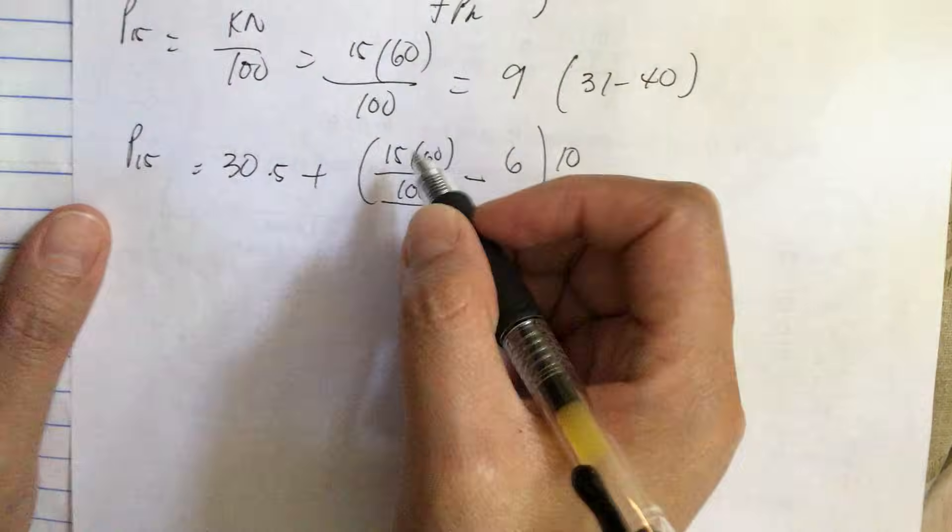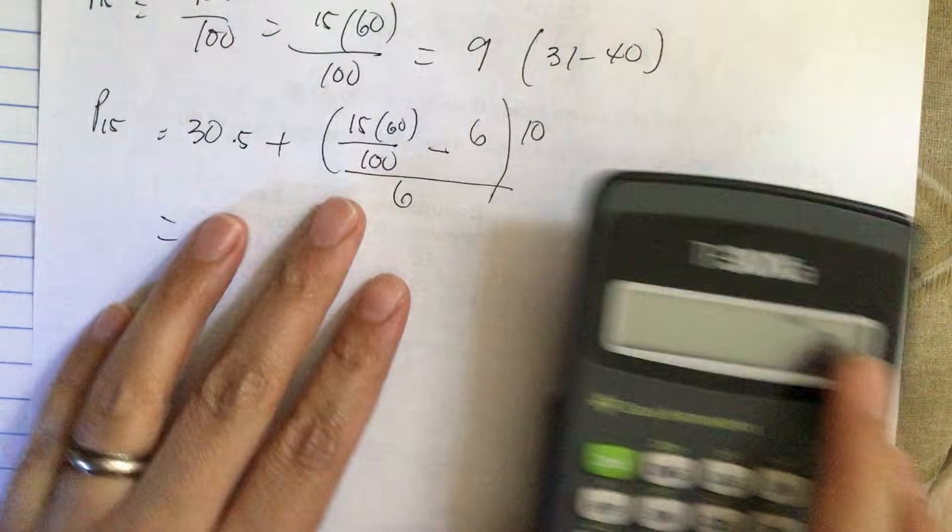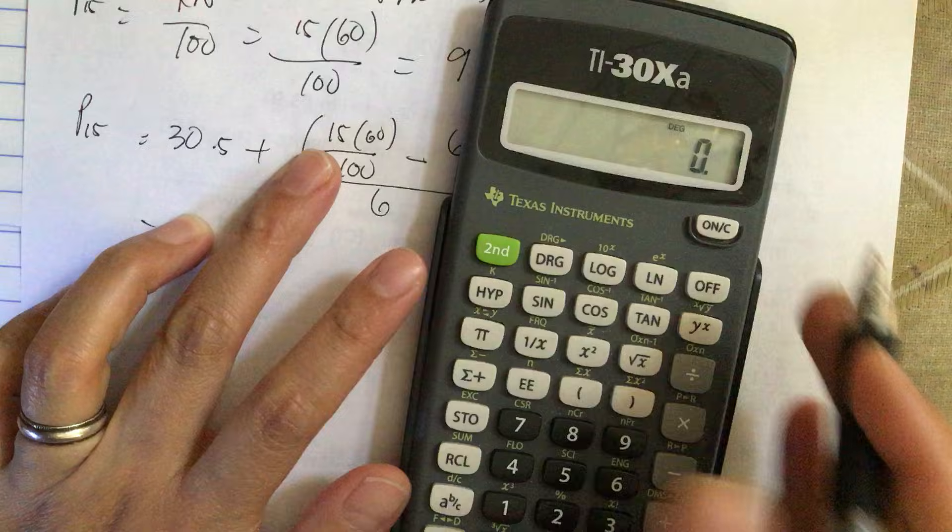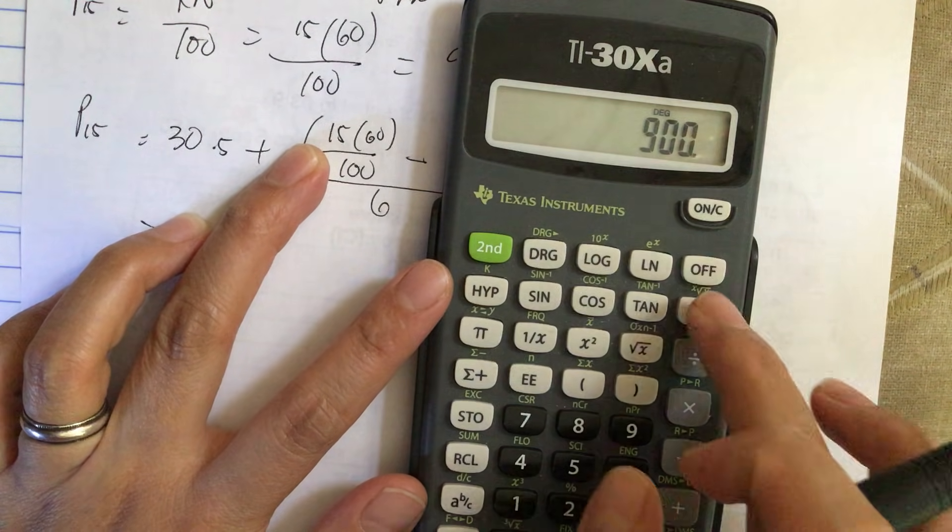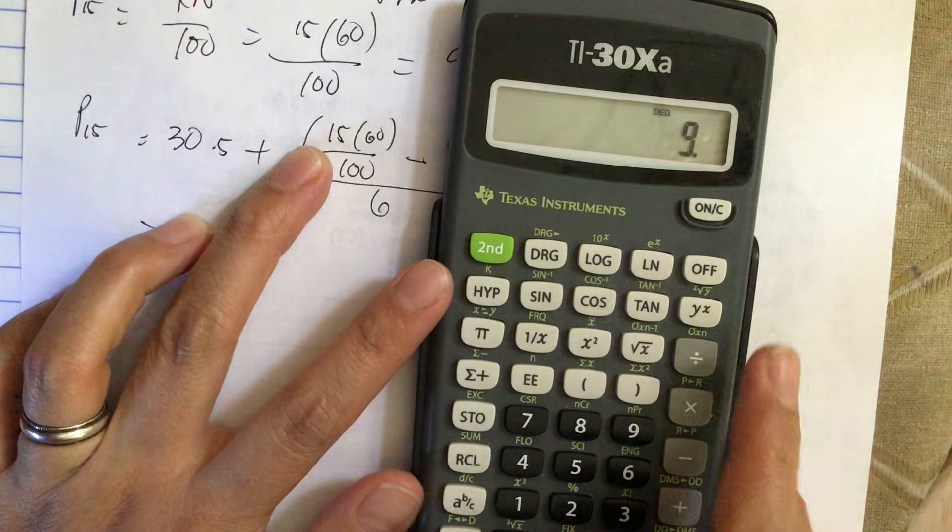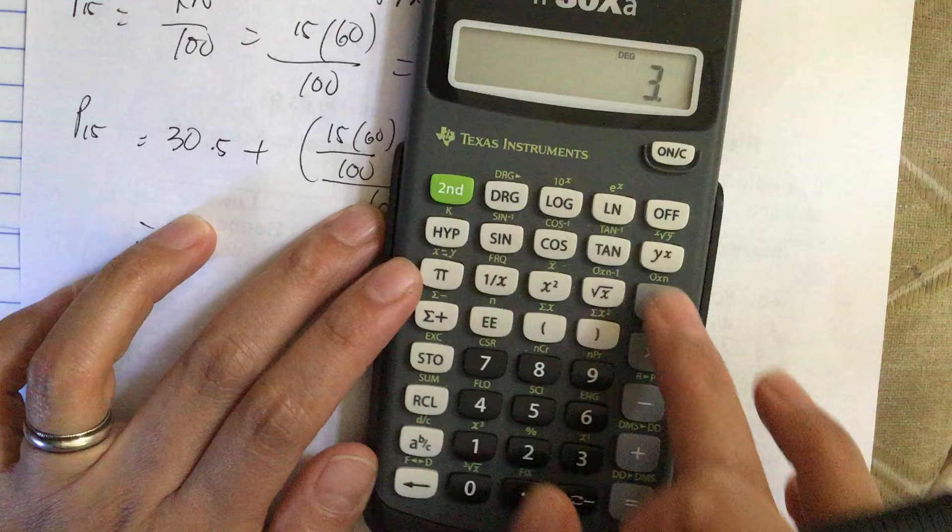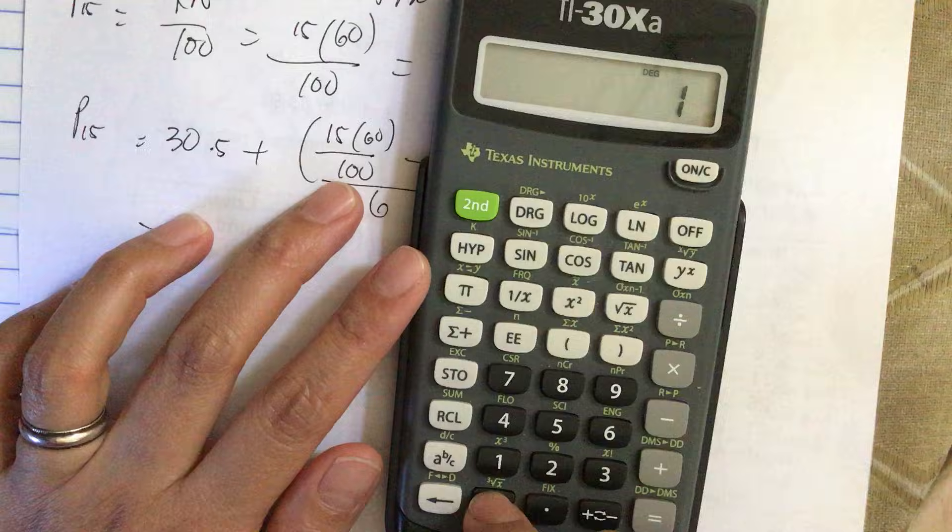So now let's calculate this number. We start here, it's inside the parenthesis, so it's 15 times 60 divide 100 minus 6, and then we divide by 6, and then we multiply by 10.